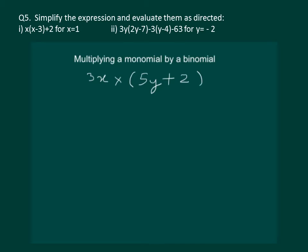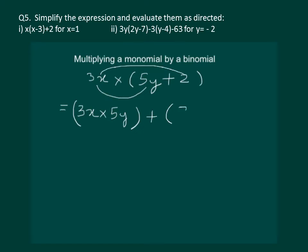So, to multiply these two, the first step is to multiply 3x with 5y, and then we will use a positive sign since it is in the bracket. The second step would be to multiply 3x with 2. So we have used the distributive property to multiply a monomial by a binomial.